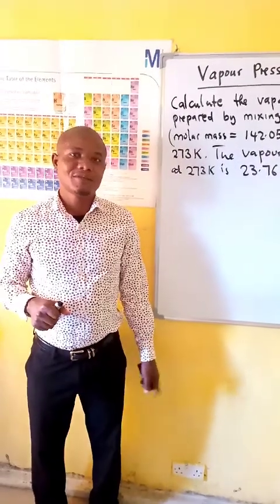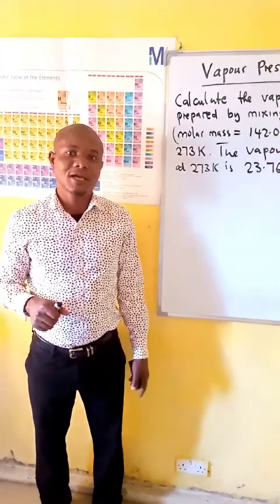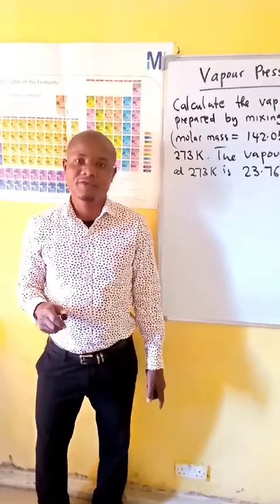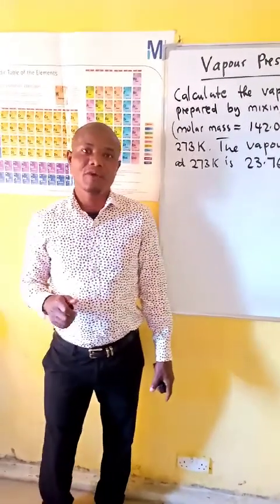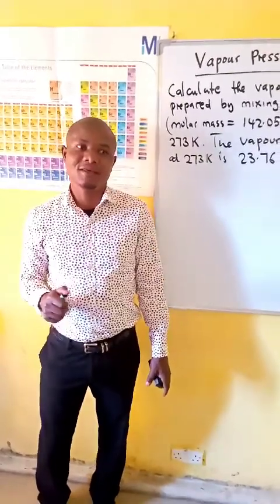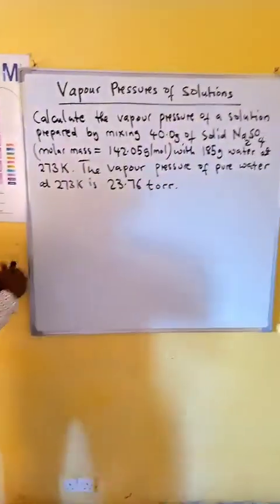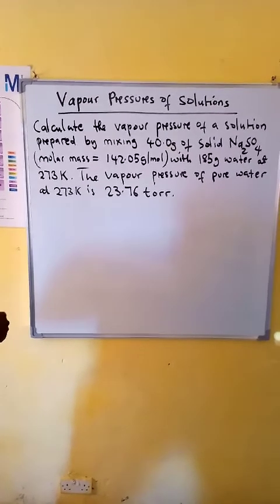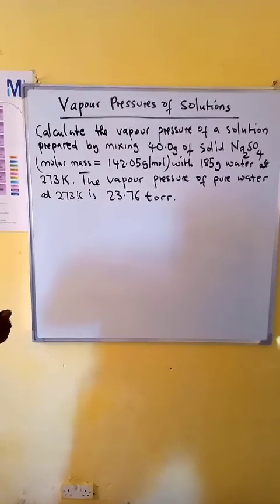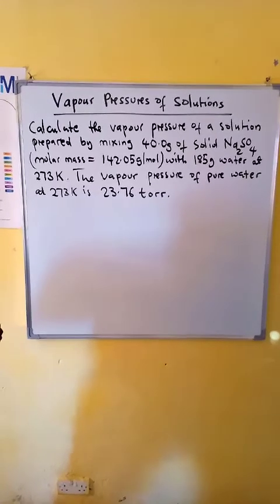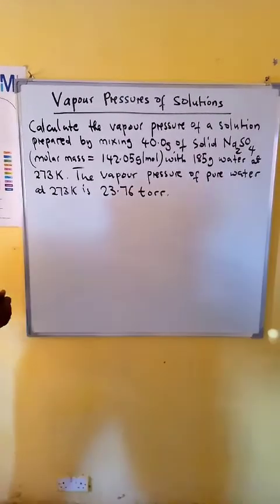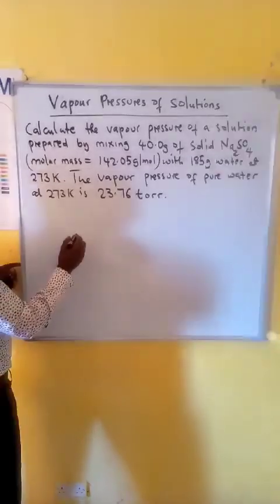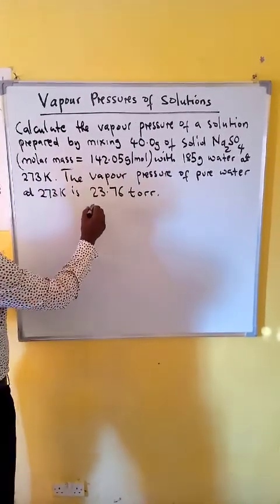Hi, in this tutorial we want to see how we can calculate vapor pressure of a solution when the solute given is an ionic solute. Example: calculate the vapor pressure of a solution prepared by mixing 40.0 grams of solid sodium sulfate with 185 grams of water at 293 Kelvin. The vapor pressure of water at 293 Kelvin is 23.76 mmHg.